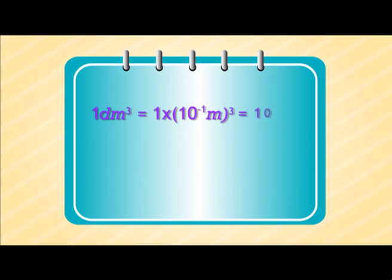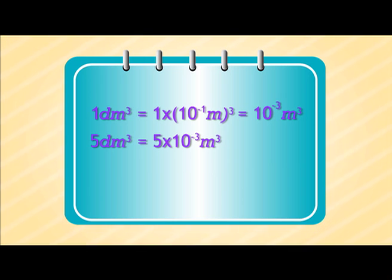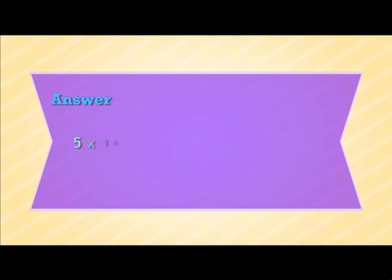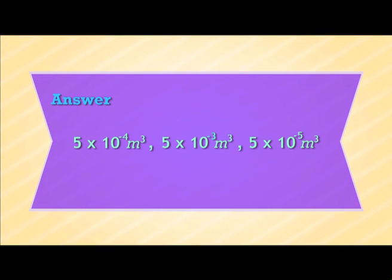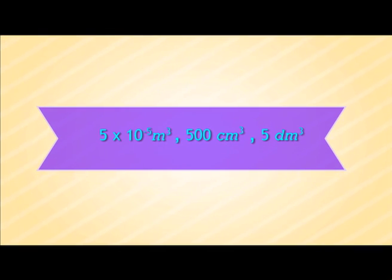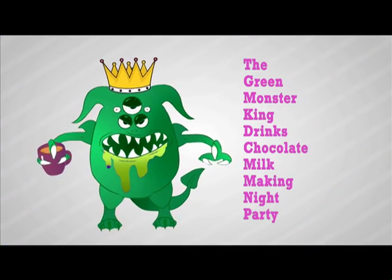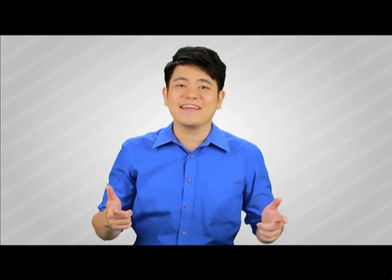Next, 1 dm³ equals to 10 to the power of minus 3, so 5 dm³ equals to 5 times 10 to the power of minus 3 meter cube. The last quantity is already in standard form. Put them next to each other in standard form — the lowest value is the one with the smallest power. In this case, negative 5. Thus, the order should be: 5 times 10 to the power of minus 5 meter cube, 500 cm³, and 5 dm³. Remember, the Green Monster King drinks chocolate milk making night parties. Good luck in your exams.